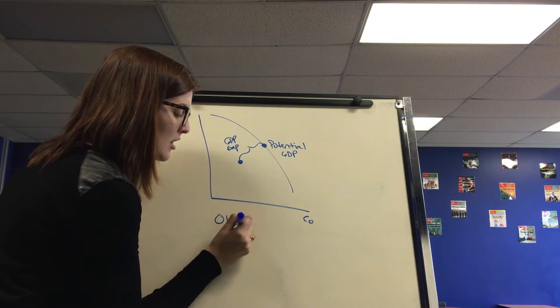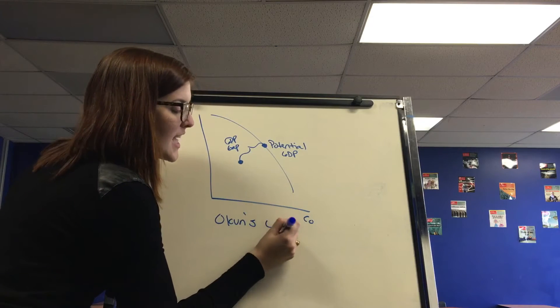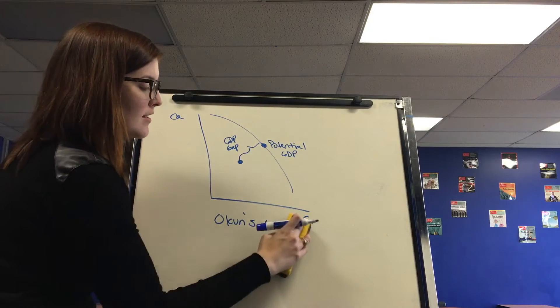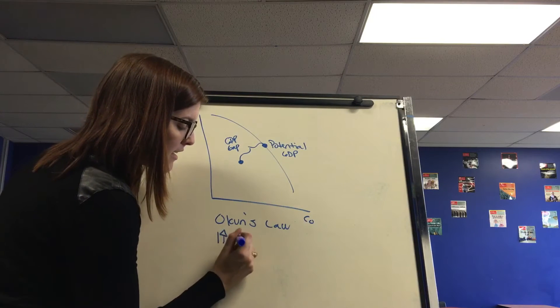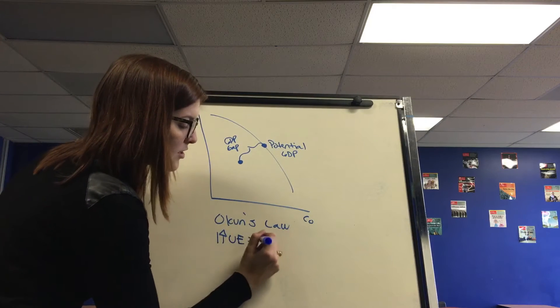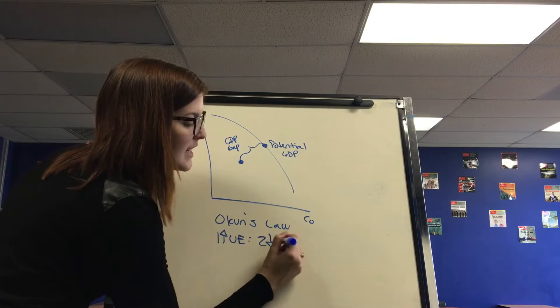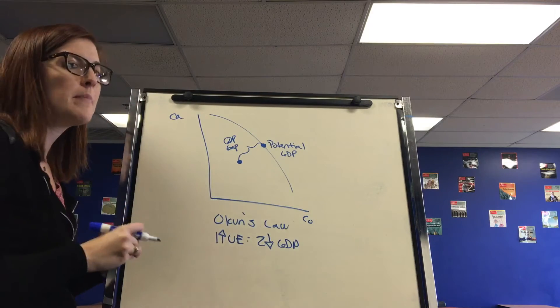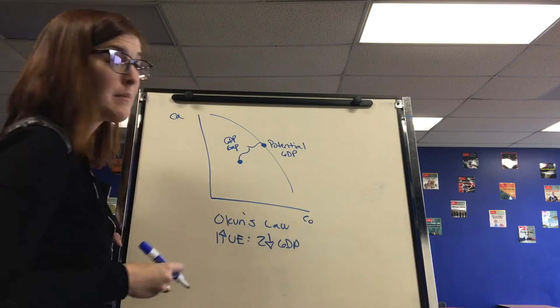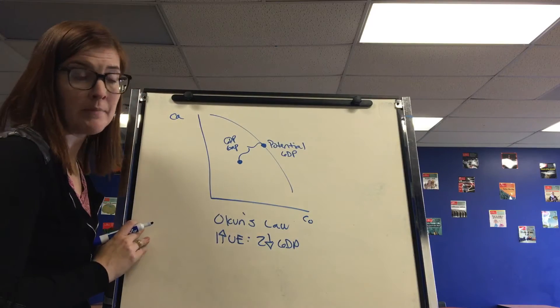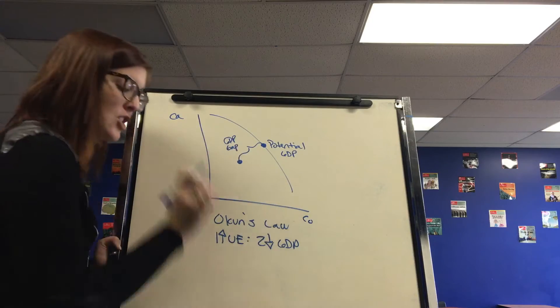This thing called Okun's law measures that GDP gap. Okun's law states that for every one percent increase in unemployment, there's a two percent decrease in GDP. So it measures how much of an impact an increase in unemployment can have on overall GDP. And that means overall health of the economy.